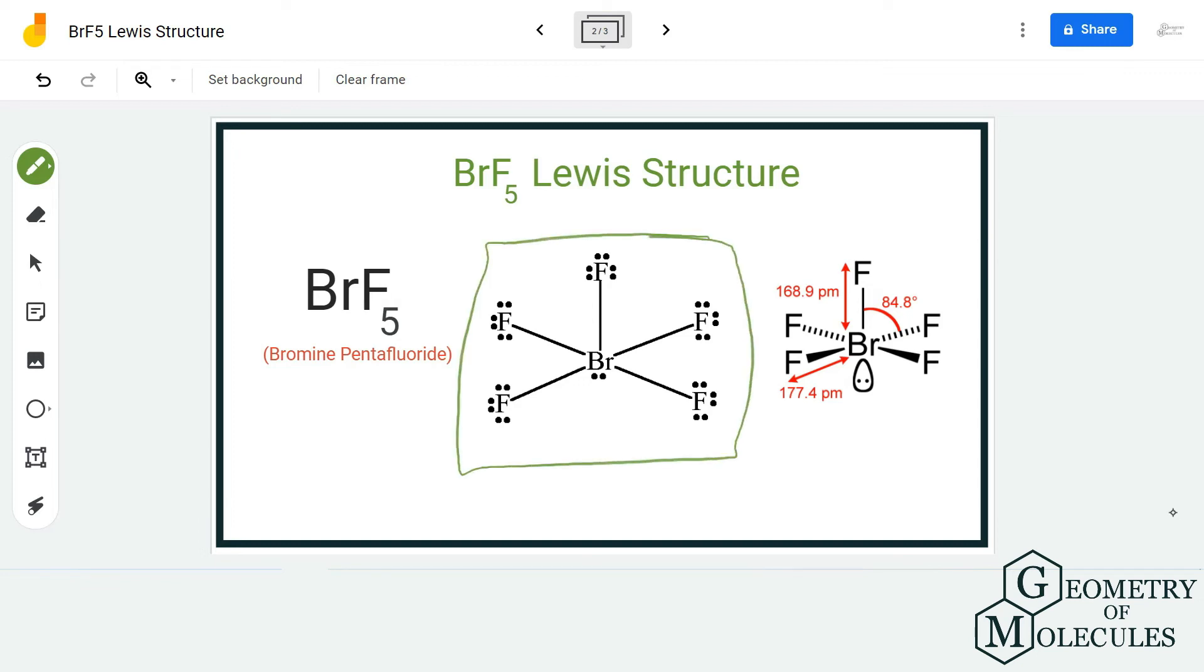You can also check the formal charges of bromine and fluorine atoms to confirm this Lewis structure. You can check out the formal charge calculator link that we have given in our description box below, or you can also use the formula for calculating the formal charges.